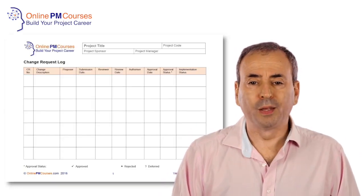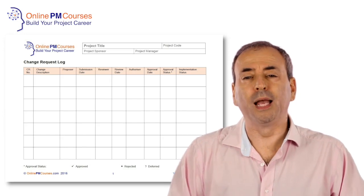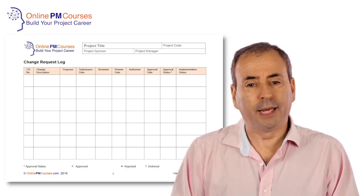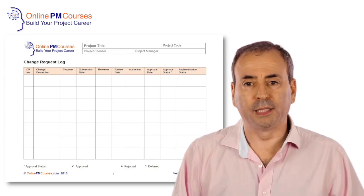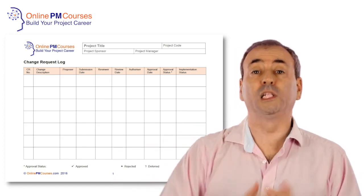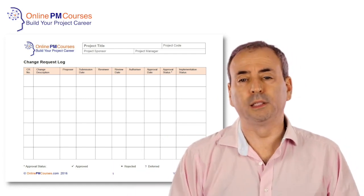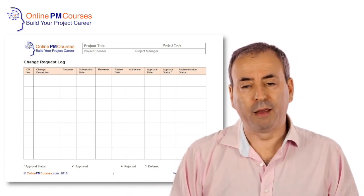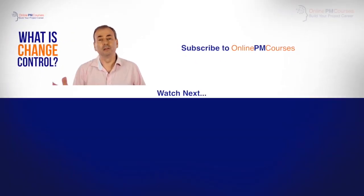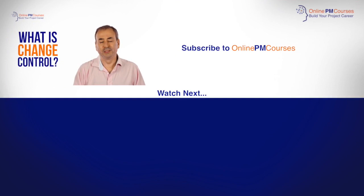Whether there is a change to be made or whether there isn't, every request goes into a change log which details the request that's made, the timings, the people concerned, the decision, and the implications for the budget and the schedule and anything else. That change log creates your audit trail of all the changes and the decisions that are made, who made those decisions, and where we can find the evidence on which they based their decision. That, in short, is change control.